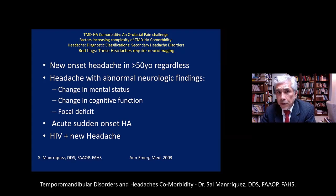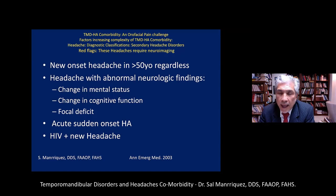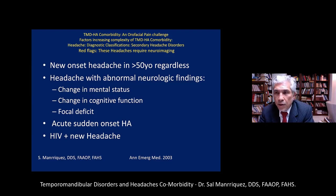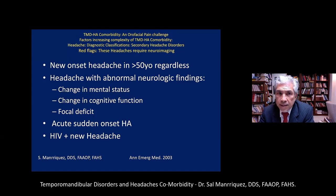New onset headache at age 50 is considered a red flag because over that age group we tend to find more abnormal neurologic incidences. Key warning signs include foggy or unclear cognitive function, focal deficits — sudden inability to hear out of one ear, see out of one eye, or blurry vision — and a sudden onset headache. Certain viral infections with new headache are also red flags, including HIV but not exclusively.